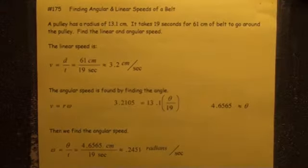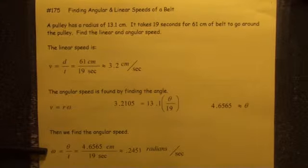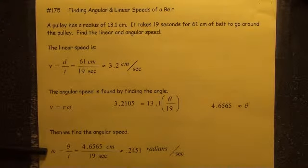Then, now we can calculate angular speed because we found the radians. So we just divide 4.6565 divided by 19. We get 0.2451 radians per second.